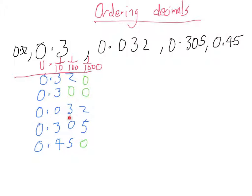So firstly we've got 0.032, that's the smallest. Then we've got the next smallest which is 300, which is 0.3.